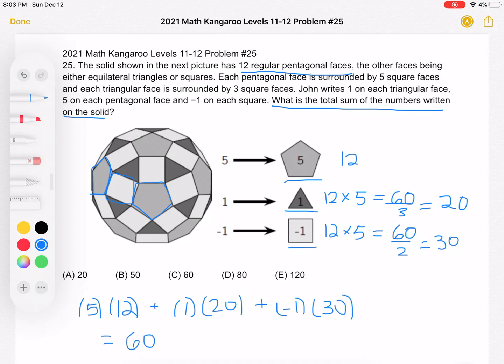So for the sum, we have 60 plus 20 minus 30, which gives us a sum of 50. And that is answer choice B.